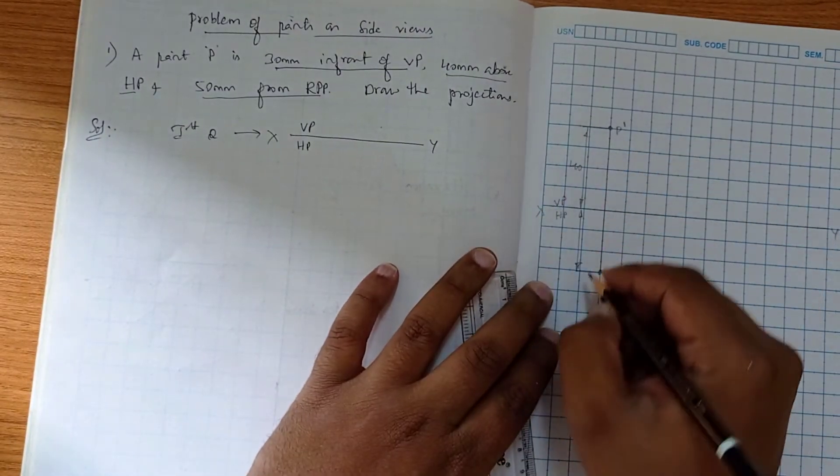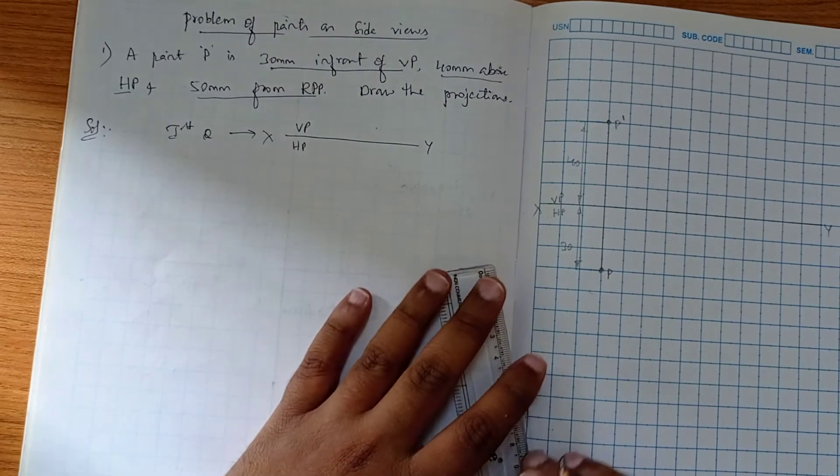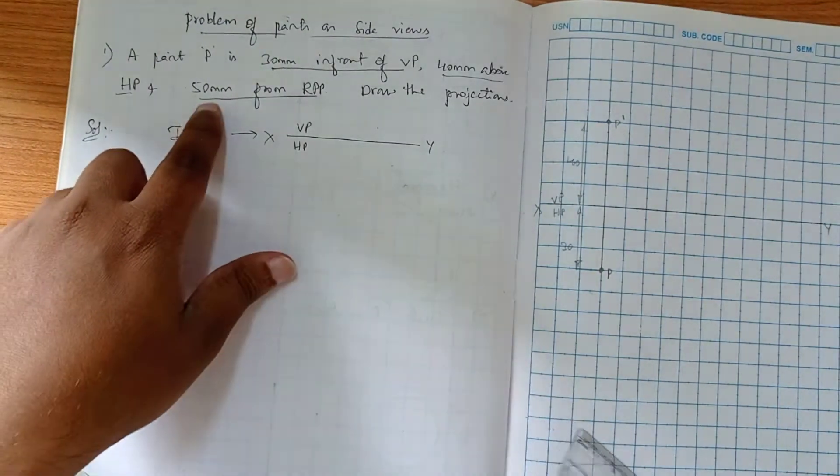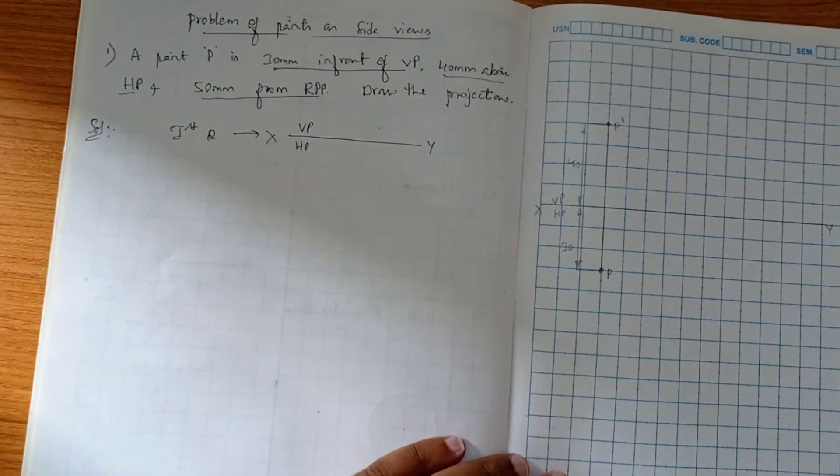This is 40mm and this is 30mm. Now, as you can see, this 50mm from RPP is what the side view.